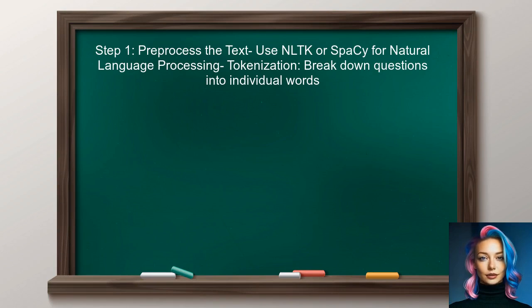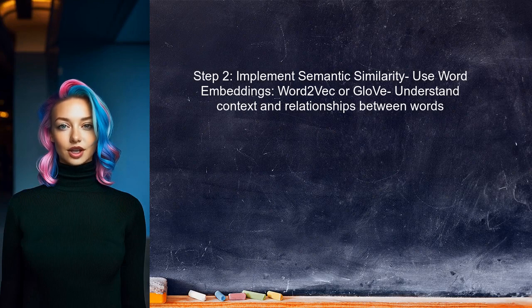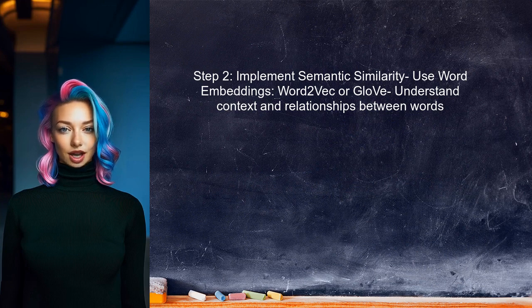First, they can utilize a library like NLTK or SpaCy to pre-process the text. This involves tokenization, which breaks down the questions into individual words. Next, the user should implement a method for semantic similarity. This can be achieved by using word embeddings, such as Word2Vec or GloVe, which help in understanding the context of words in relation to each other.